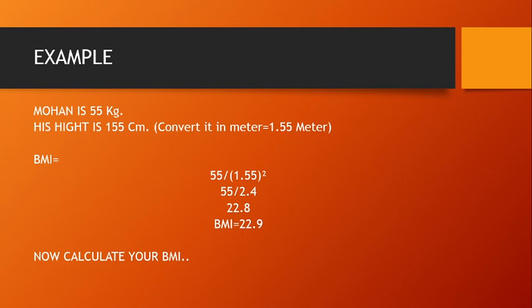अब calculate करते हैं: 55 divided by (1.55)². 1.55 का square निकालते हैं, जो आता है 2.4। तो 55 divided by 2.4 का result आता है 22.8। यह Mohan का BMI है — 22.8 or 22.9 की range में।